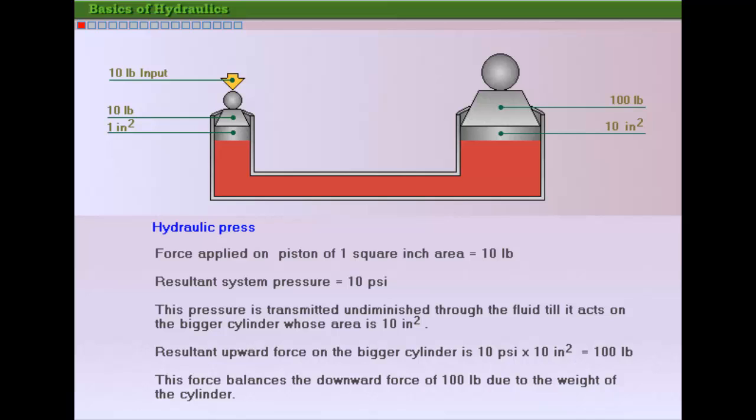A force of 10 pounds is applied to a piston area equal to one square inch. The resultant system pressure is then 10 pounds per square inch or 10 psi. This pressure is transmitted undiminished through the fluid and acts on the bigger cylinder whose area is 10 square inches. The resultant upward force on the bigger cylinder is 100 pounds.